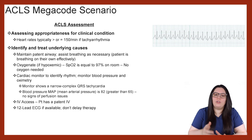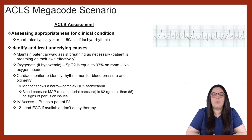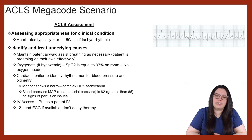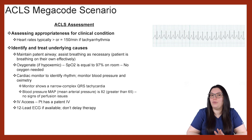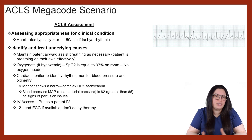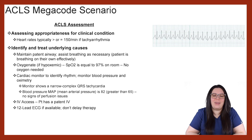We want to look at the cardiac monitor to identify the rhythm, as well as monitor blood pressure and oximetry. Looking at the monitor, we know that this is a narrow complex QRS tachycardia. When looking at blood pressure, we have a mean arterial pressure of 82, which is greater than 65, so we know there are no signs of any perfusion issues taking place. We want to make sure the patient has IV access — in this case, after surgery they will have a patent IV. We also want to obtain a 12-lead ECG if available, without delaying therapy unnecessarily.